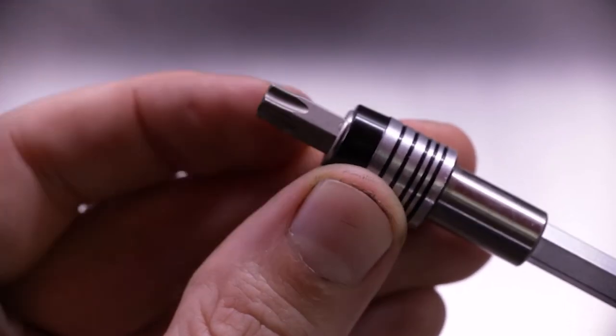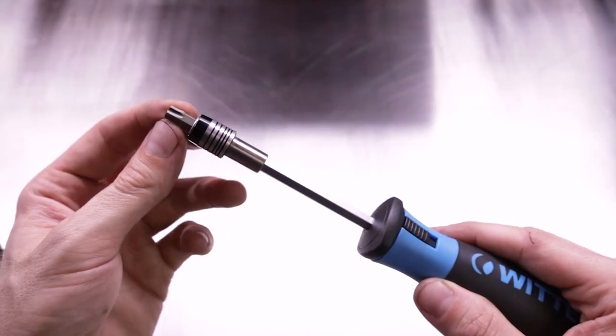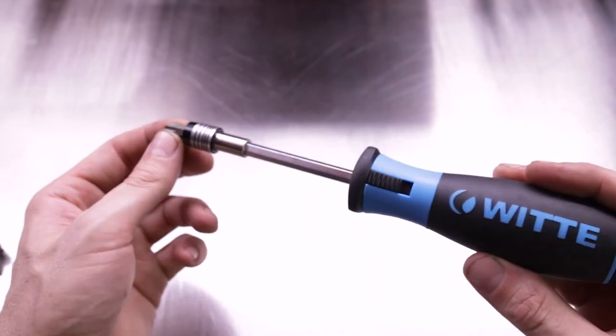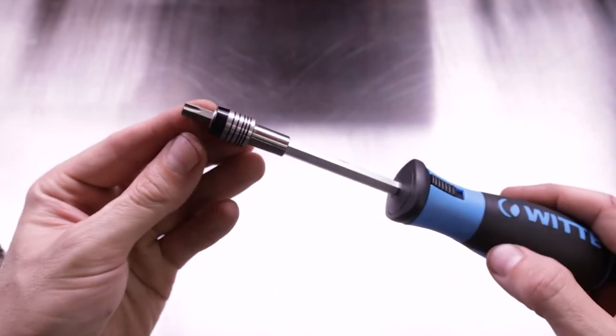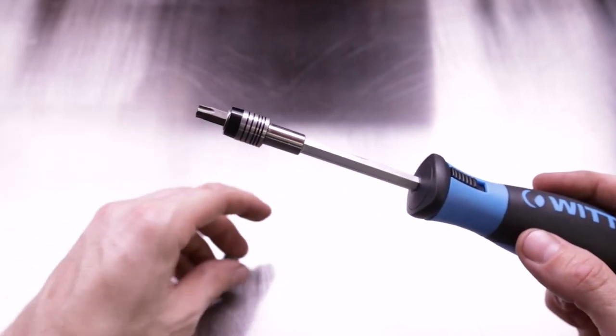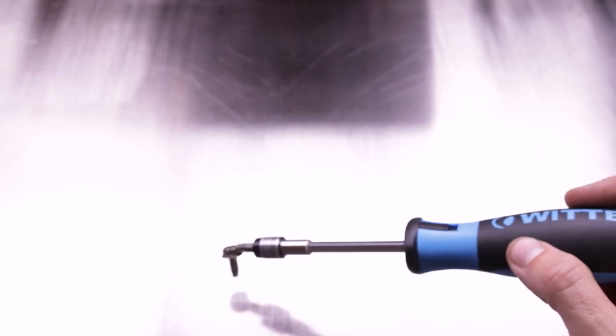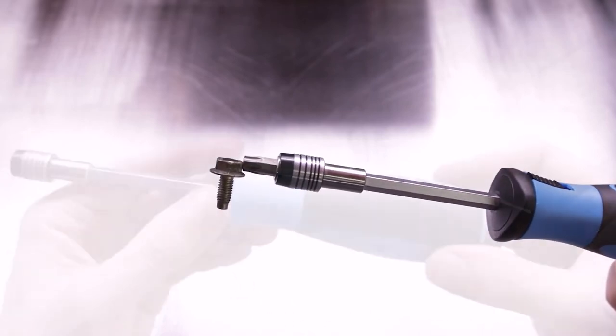It has a magnetic and locking collar for the chuck so you're not going to lose your bits down in a deep hole. It retains the bits and also magnetizes for picking up screws and other fasteners.